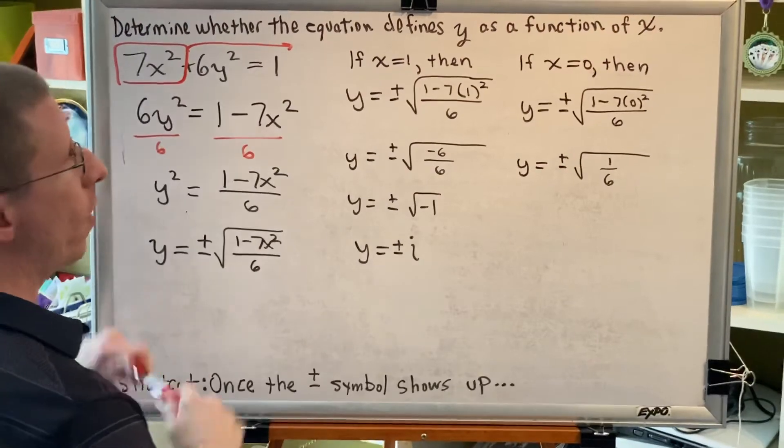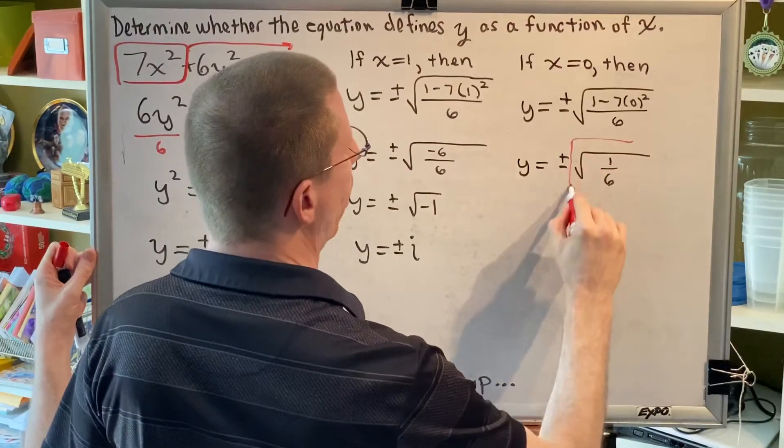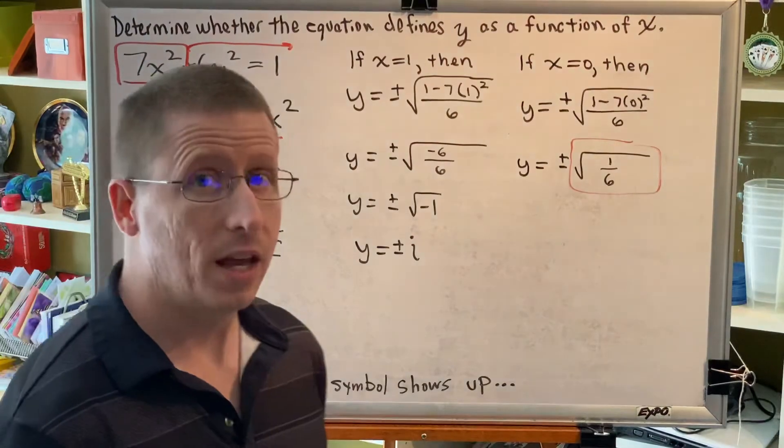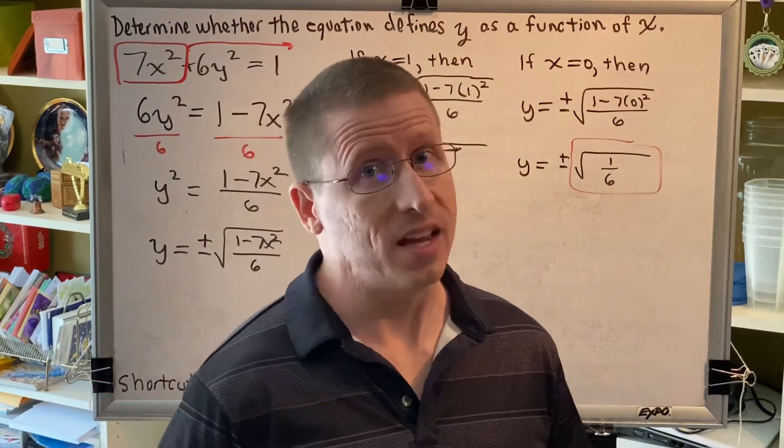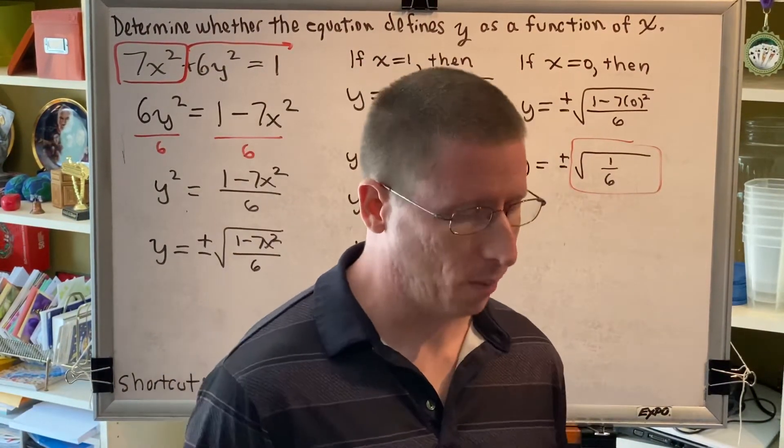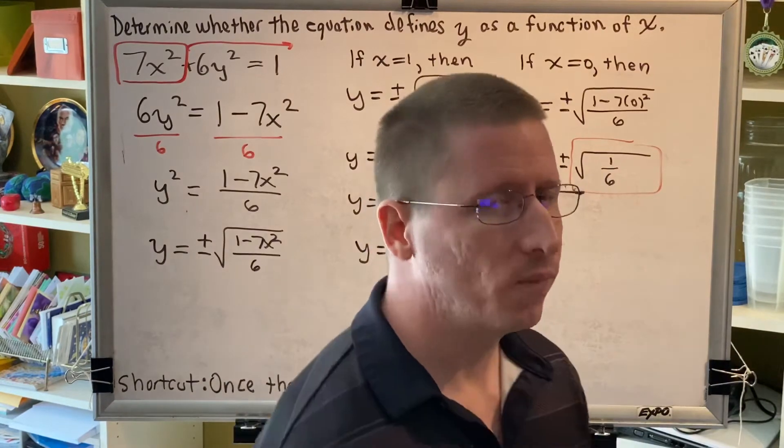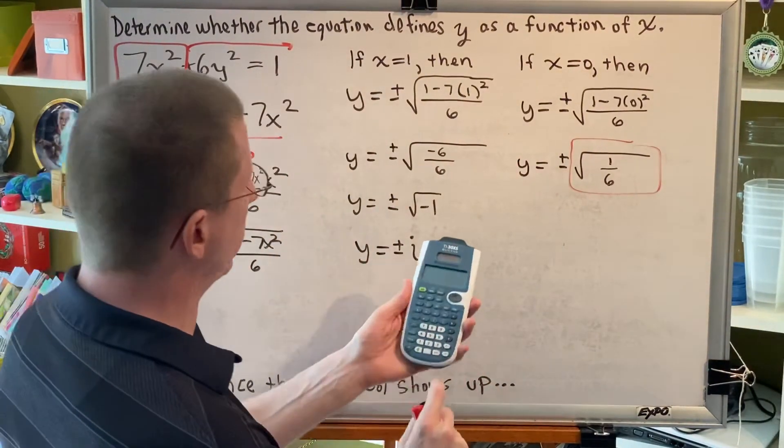Now, is the square root of 1/6 a real number? The answer is yes, it is a real number. It's messy, it's an irrational number, but it is a real number. So, let's put it on our calculators and get a decimal approximation.